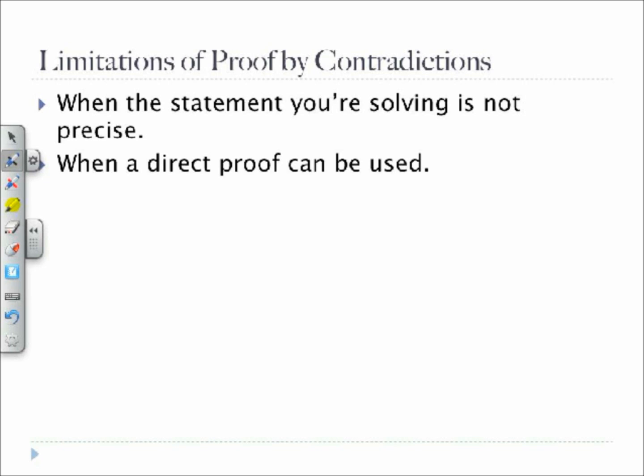However, there are some limitations, and proof by contradiction can be difficult in the following situations. When the statement you are solving is not precise, this would make it difficult to negate and form a logical argument, or when a direct proof could be used. This can make the proof by contradiction confusing and hard to follow.